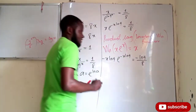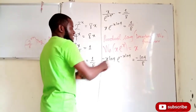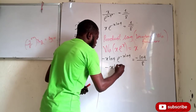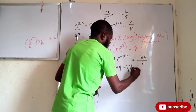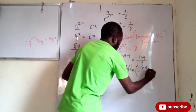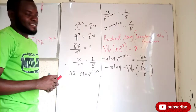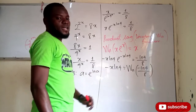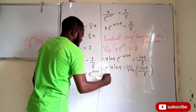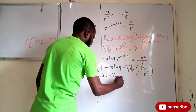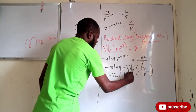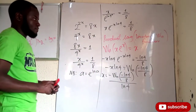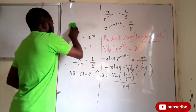So I would then have negative x ln 4 times e to the power of negative x ln 4, equal to negative ln 4 over 8. If I take the W function of both sides, I will have negative x ln 4 equals W of negative ln 4 over 8. Then dividing both sides by negative ln 4, x equals negative W of (negative ln 4 over 8) divided by ln 4.